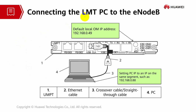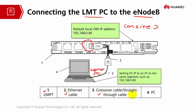To connect the LMT PC to the eNodeB, this has to be done on site. When you are at the site, there will be a USB adapter port connected directly to your laptop or PC. You need a UMPT card, an internet cable, a crossover or straight-through cable, and a PC. You have to set the PC IP as shown, and you need to be able to ping that IP. If you are able to ping it, that means you are connected and using the web LMT.